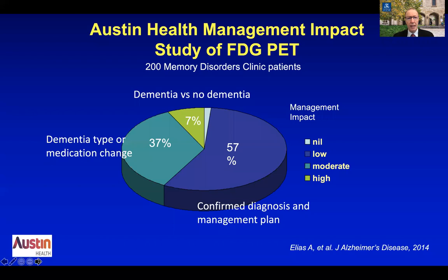Does FDG PET have any management impact? We published a study in 2014 in the Journal of Alzheimer's Disease looking at the management impact of FDG PET in 200 patients referred from the Austin Health Memory Disorder Clinic. We showed moderate to high impact in over 40% of patients. In 57% the FDG PET confirmed the clinical diagnosis, but in 37% there was a change in the diagnosis of dementia type or a change in the class of medication. Importantly, in 7% of patients the diagnosis was changed from dementia to no dementia — for example, severe depression instead of dementia.